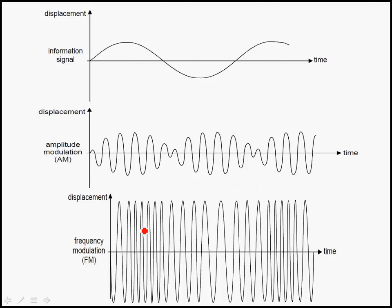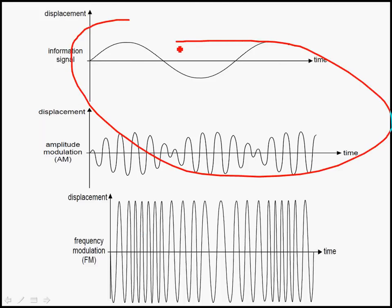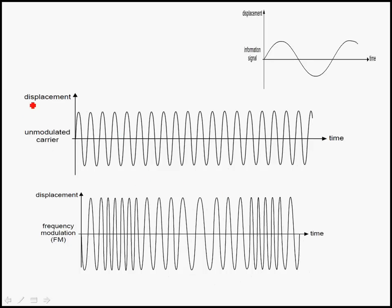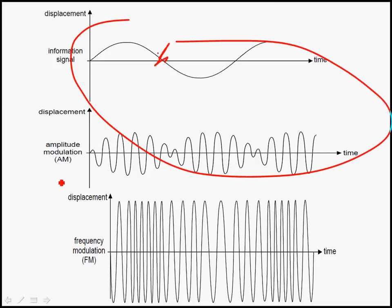What we did previously was use the information signal to change a carrier wave — the unmodulated carrier wave — to look like either the AM or FM waveform. This carrier wave, which has been modulated, we call the modulated carrier wave. It's still a carrier wave because it has a large frequency, but now it has been modulated and contains information of the audio signal — the data of the displacements and the data of the frequency.